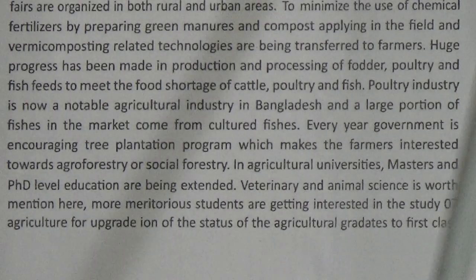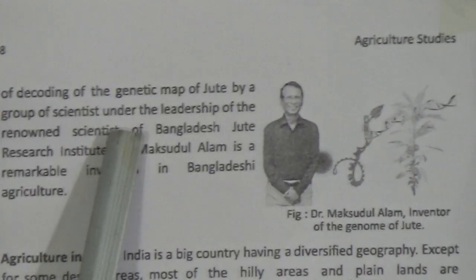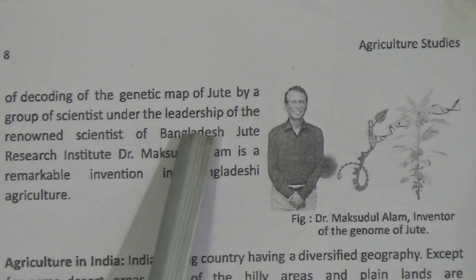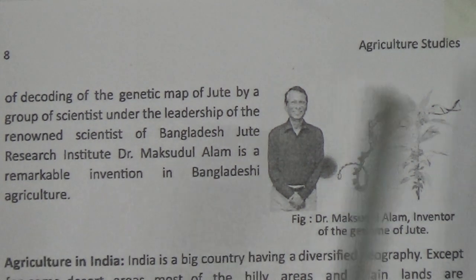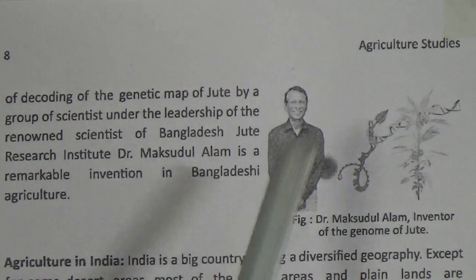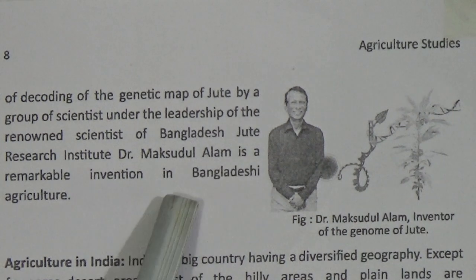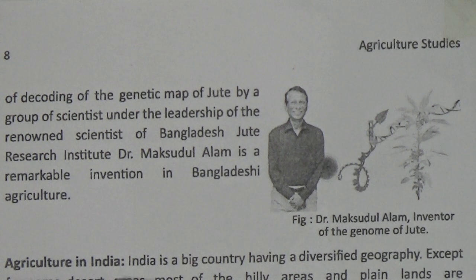The decoding of the genetic map of jute by a group of scientists under the leadership of renowned Bangladeshi scientist Dr. Maksudul Alam of the Bangladesh Jute Research Institute is a remarkable invention in Bangladeshi agriculture. You can see the picture of Dr. Maksudul Alam — he is the inventor of the jute genome. This shows that Bangladesh can contribute new discoveries to agricultural research.